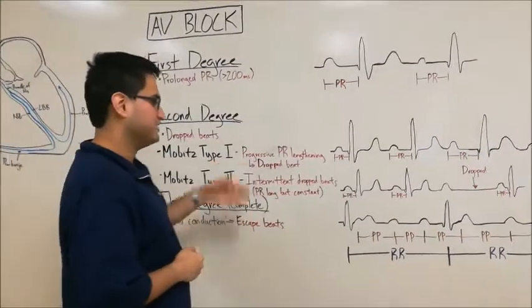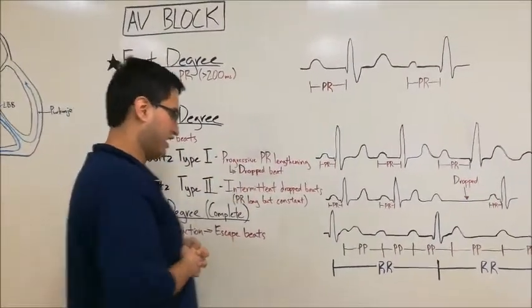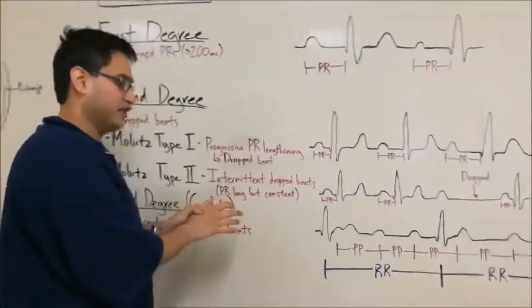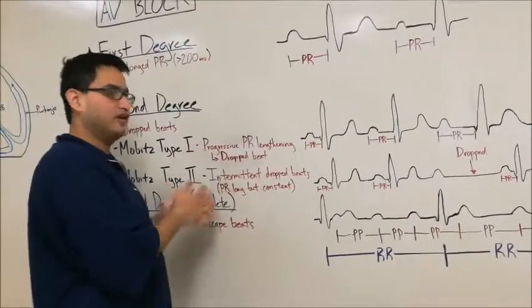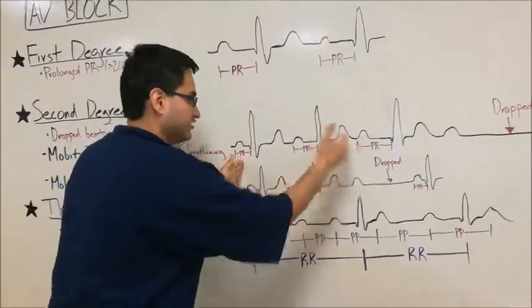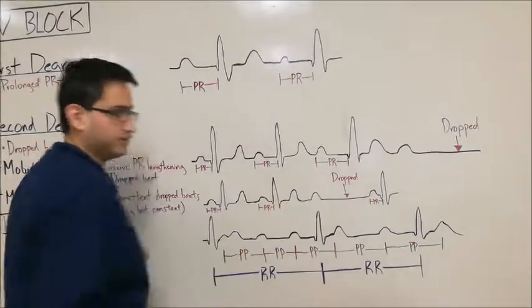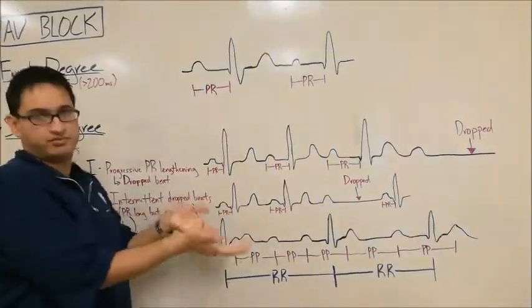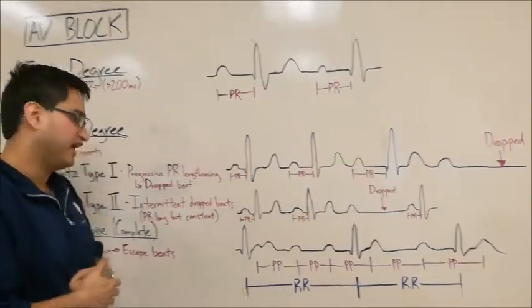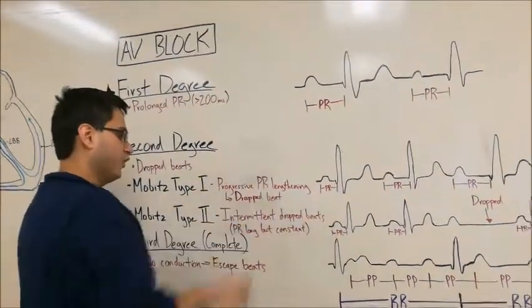And for Mobitz type 2, you have intermittent drop beats. And the PRs are long, but they are constant. So unlike type 1, where the PR is prolonged in a consistent fashion, here's a prolonged PR, prolonged PR, drop beat, same prolonged PR. Even though these look short, just we're pretending these are prolonged PRs. But the idea is that there's progressive lengthening here, where there's no lengthening here.